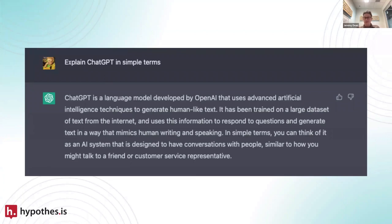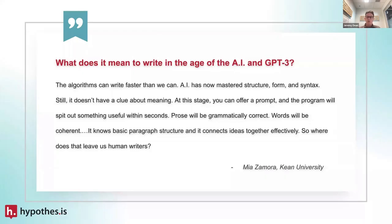There's a lot of fear about students using ChatGPT in place of their own writing, about AI for grading, about whether teachers and students need to write at all if computers can be so fluent. It is indeed existential. There's also a lot of curiosity: if computers can write like this, what is the job of the writing teacher? Dr. Mia Zamora at Kean University asks: what does it mean to write in the age of AI? The algorithms can write faster than we can — AI has mastered structure, form, and syntax, yet it doesn't have a clue about meaning.